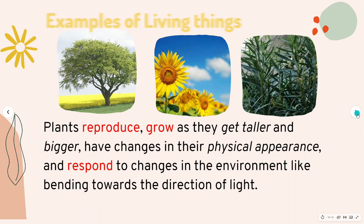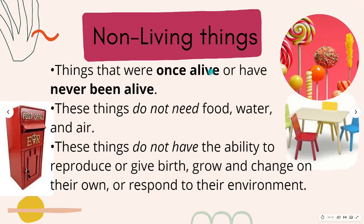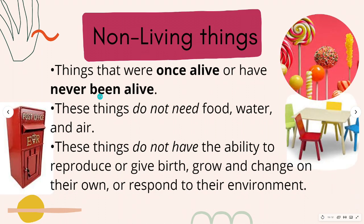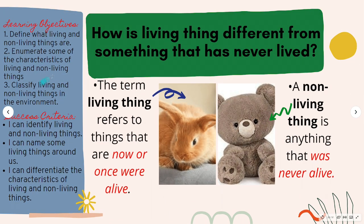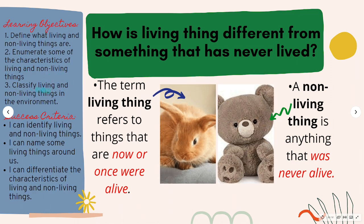Now, let's talk about non-living things — things that were once alive or have never been alive. Non-living things do not need food, do not need water and air, just like lollies, a table and chair, and a mailbox. These things do not have the ability to reproduce or give birth, grow and change on their own, or respond to their environment. You already know what living and non-living things are. We also enumerated some of the characteristics of living and non-living things and classified living and non-living things in the environment.